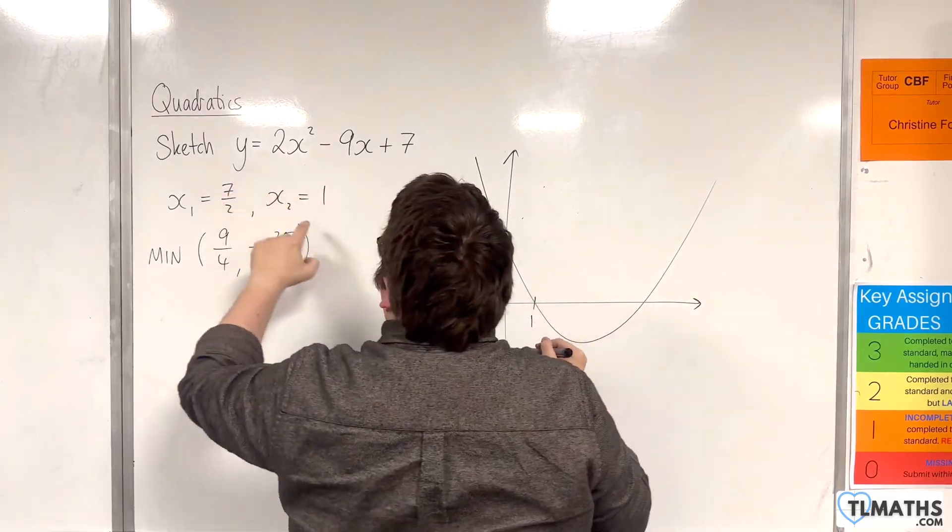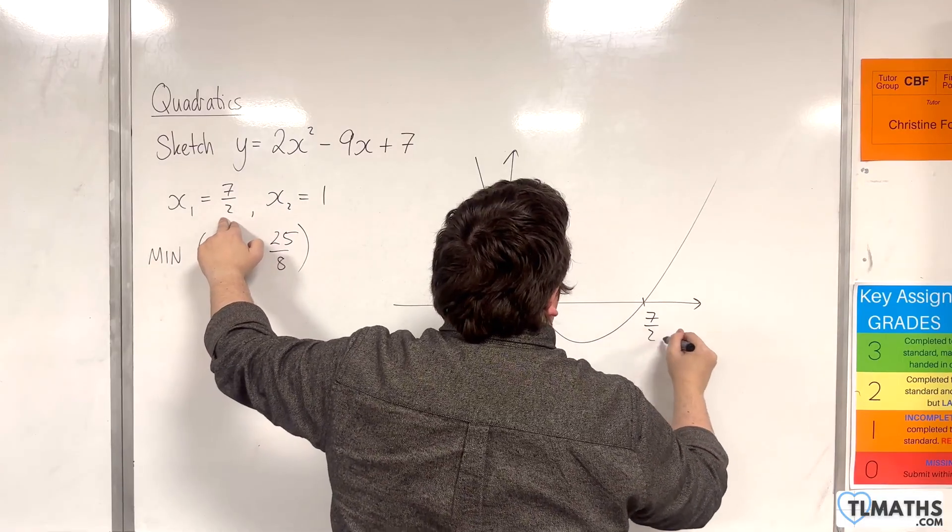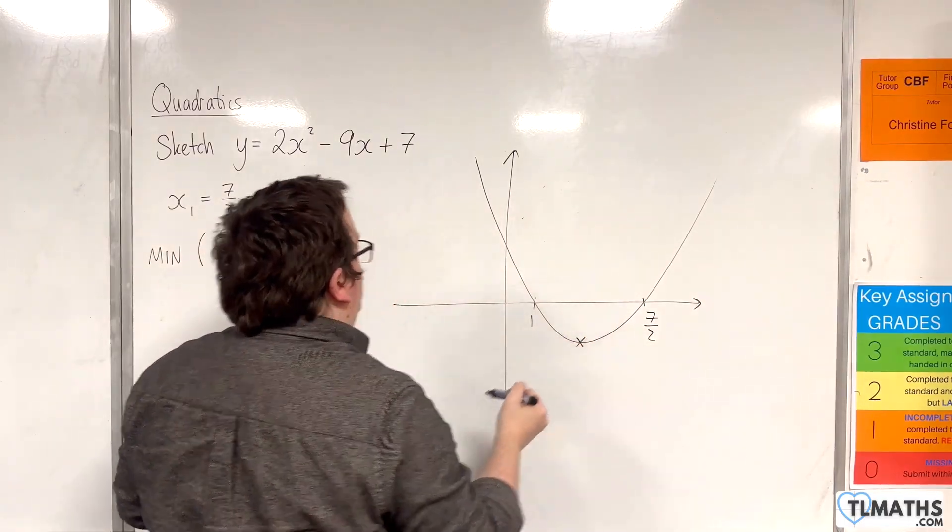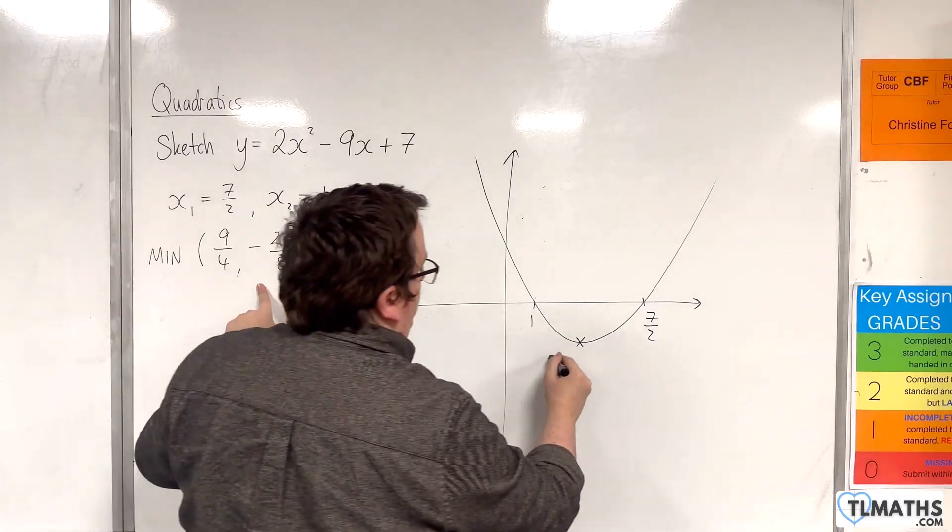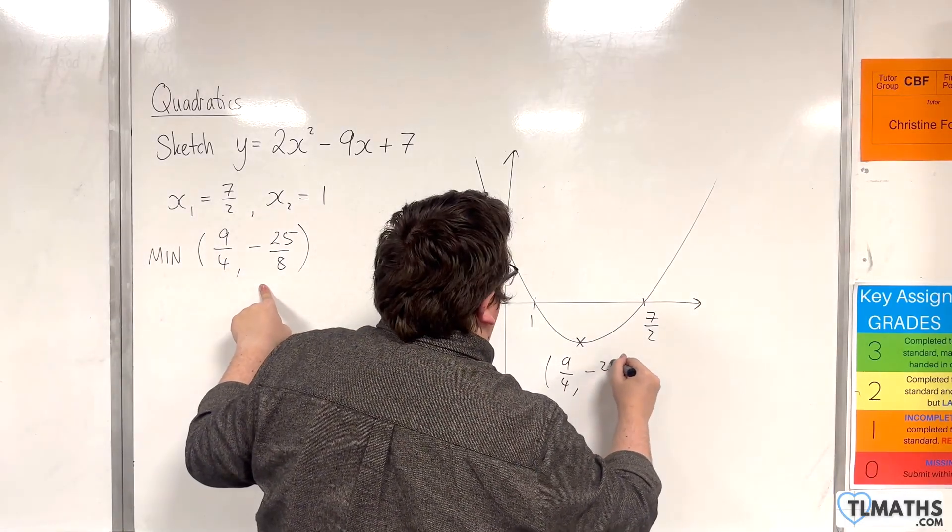Here's 1. Here's the 7 halves. Here is the minimum point. So 9 quarters minus 25 eighths.